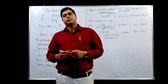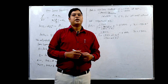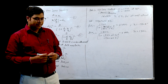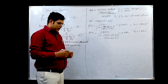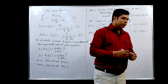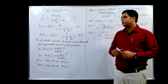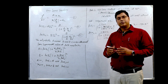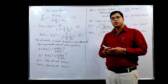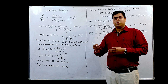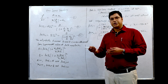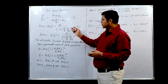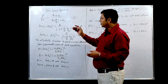Welcome dear learner. Today we will talk about the Van Laar equation and we will see the problems of this topic. The Van Laar equation is basically used for non-ideal solutions where we have to determine the activity coefficient of component 1 and component 2, or if more than 2 components, component 3 as well, with the use of this formula.